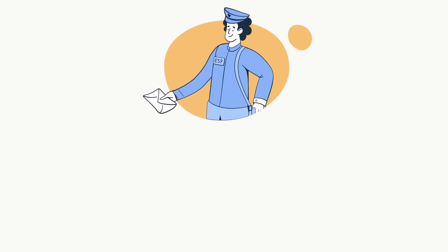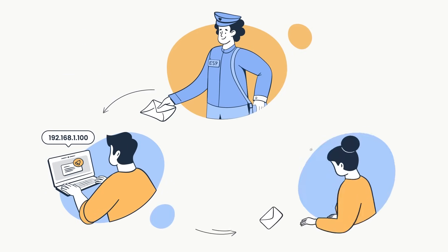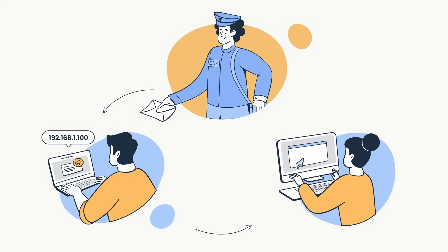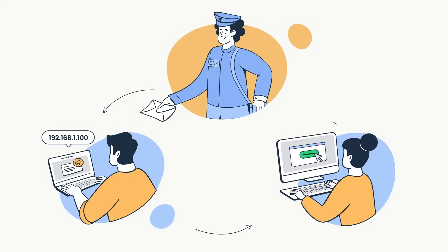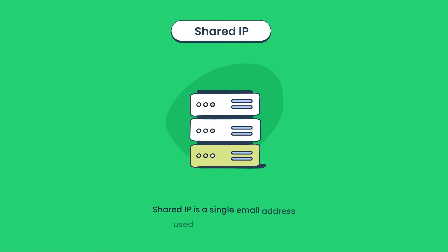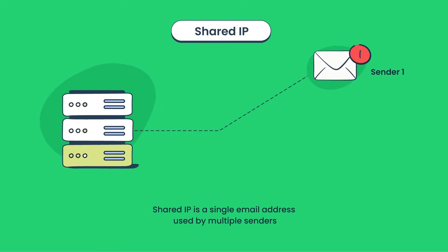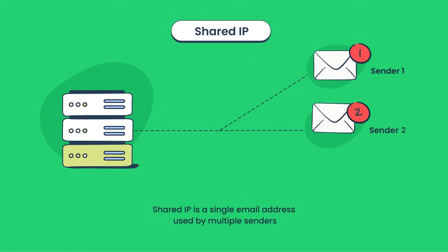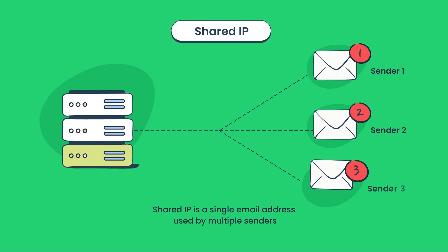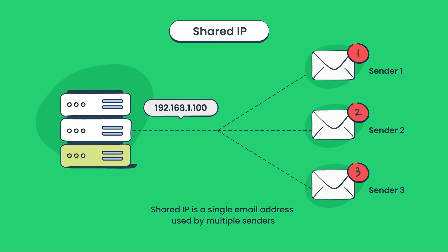Every email service provider assigns IP addresses to its users, and every sent email is linked to that IP address. The IP itself is connected to a domain name. A shared IP is a single address used by multiple senders. It's often the case with free email services, and the actions of one sender impact others sharing the same IP address.